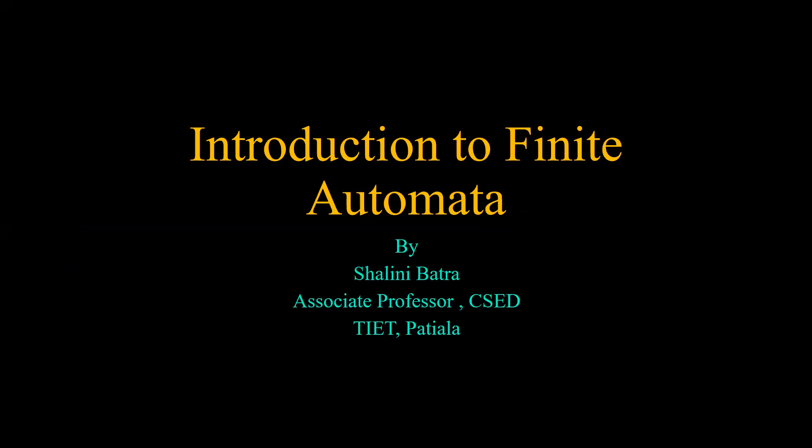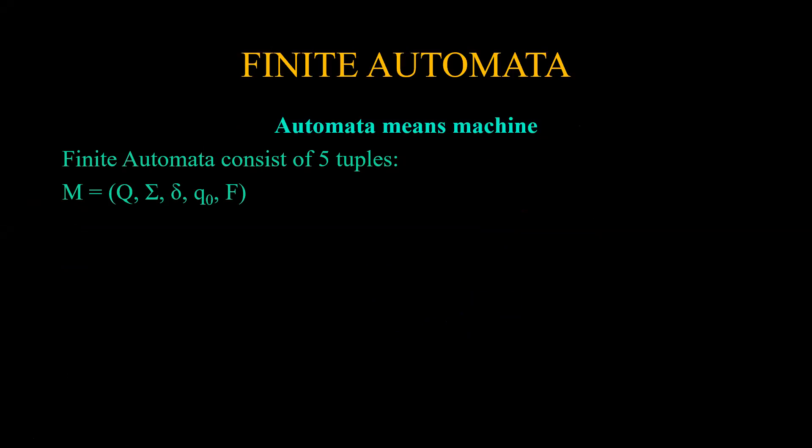The first topic of theory of computation is finite automata. Automata means a machine, and finite automata consists of five tuples.